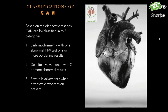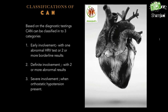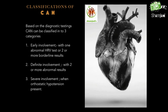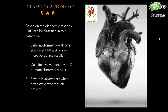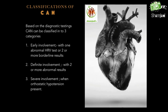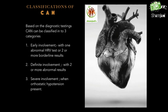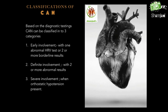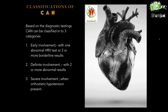Next we will see the classifications of CAN. Based on diagnostic testing, CAN can be classified into three categories. The first is early involvement, meaning one abnormal heart rate variability test or two or more borderline results. The second is definite involvement, with two or more abnormal results. The third is severe involvement, when orthostatic hypotension is present.